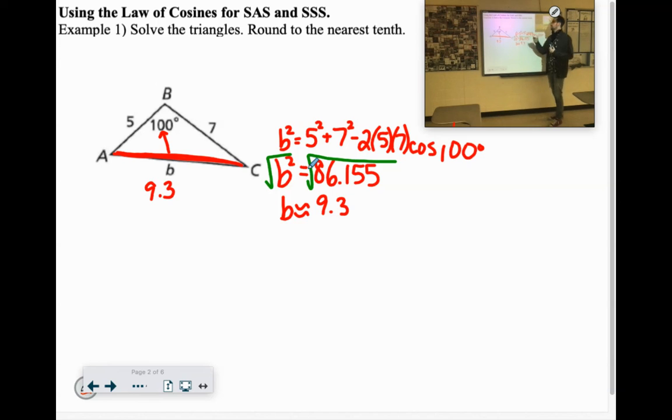So we'll say 9.3 for B. Cool. Great. Now we need to figure out the other angles. So you can figure them out with this same formula, the cosine formula, or you can dip back into the sine formula from yesterday. So whichever one you're more comfortable with at this point, go with. Honestly, to me, the sine one is a little easier. But let's try one with this cosine.